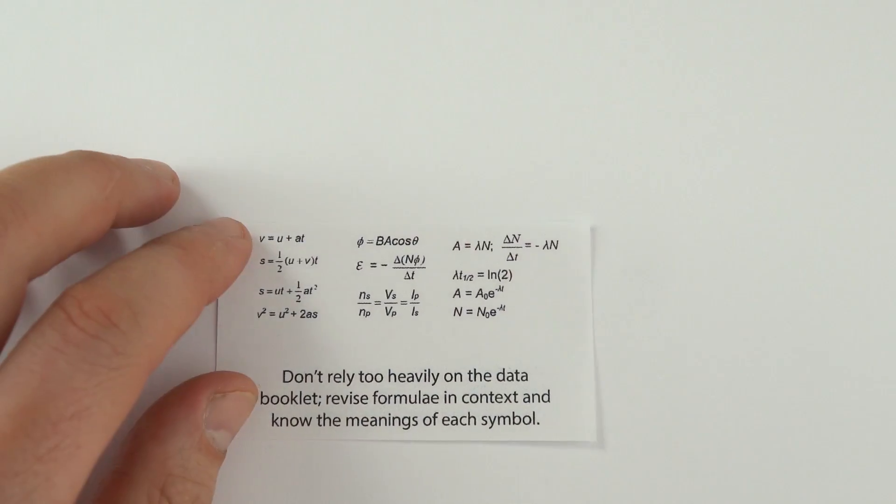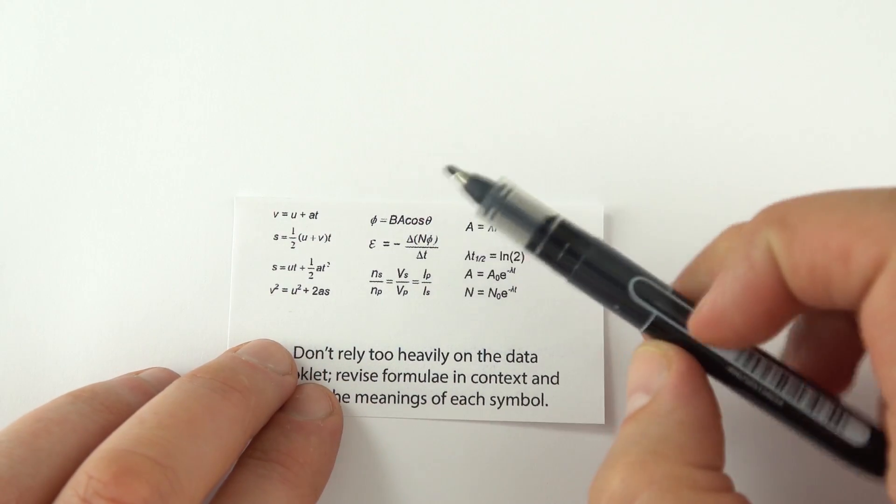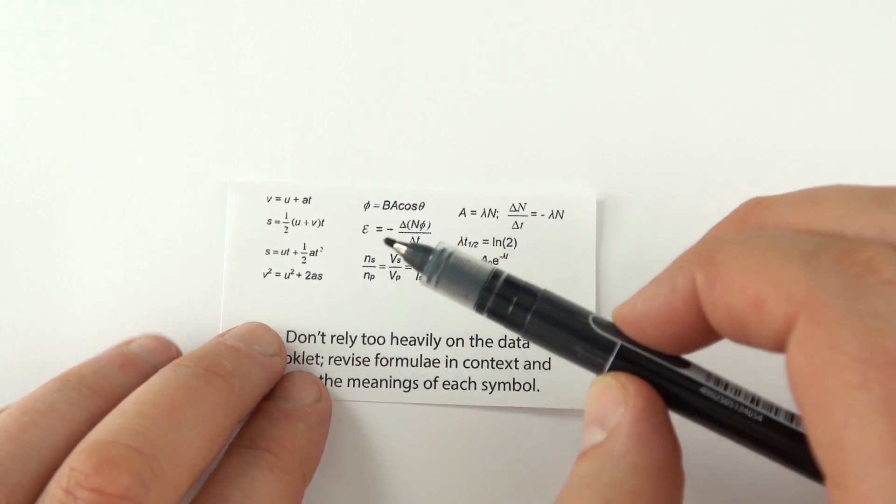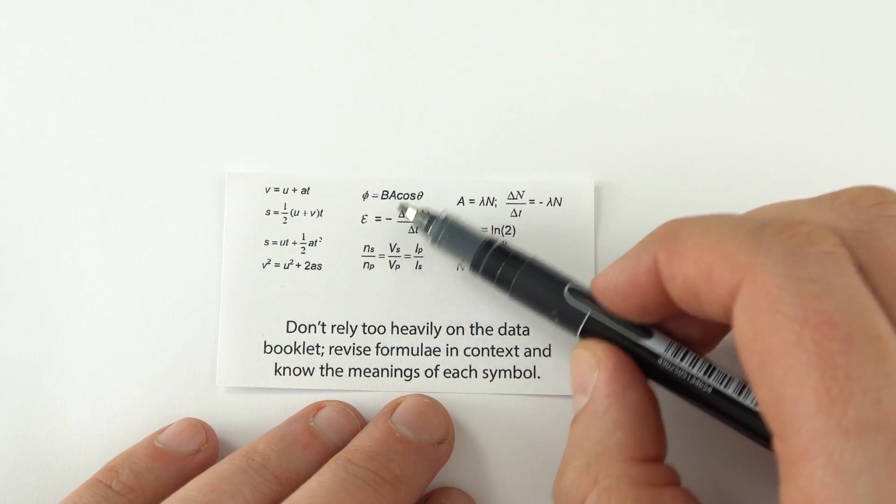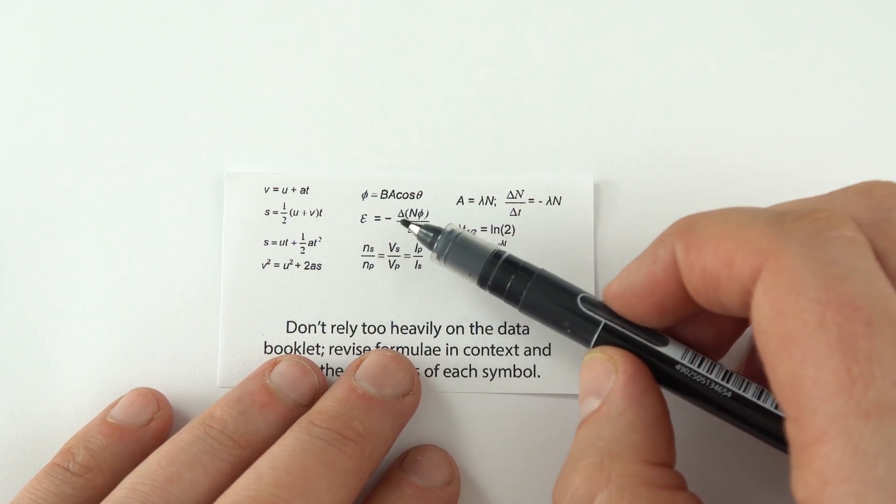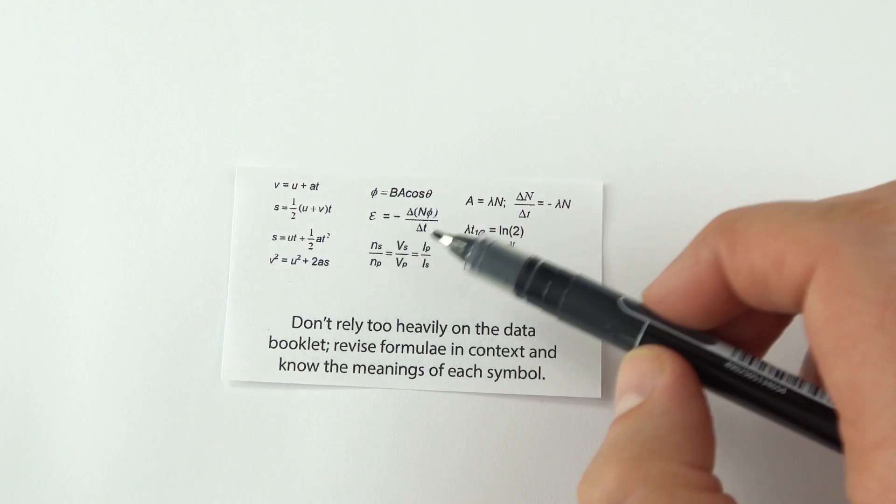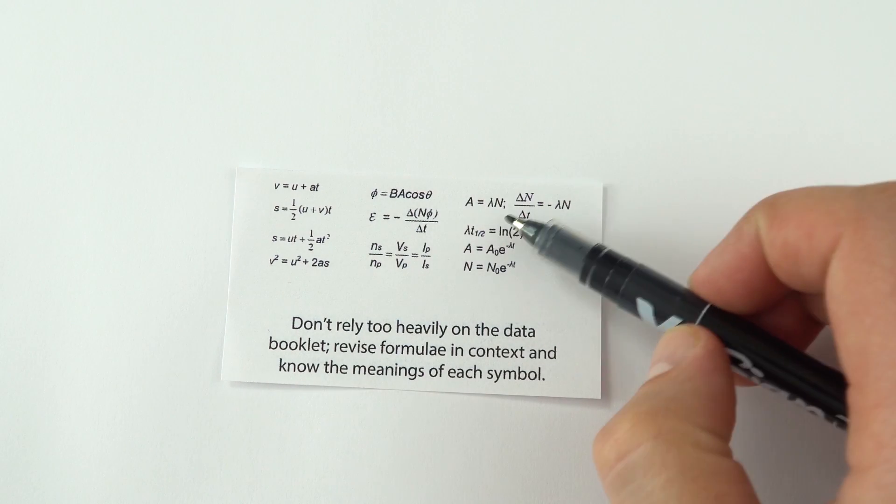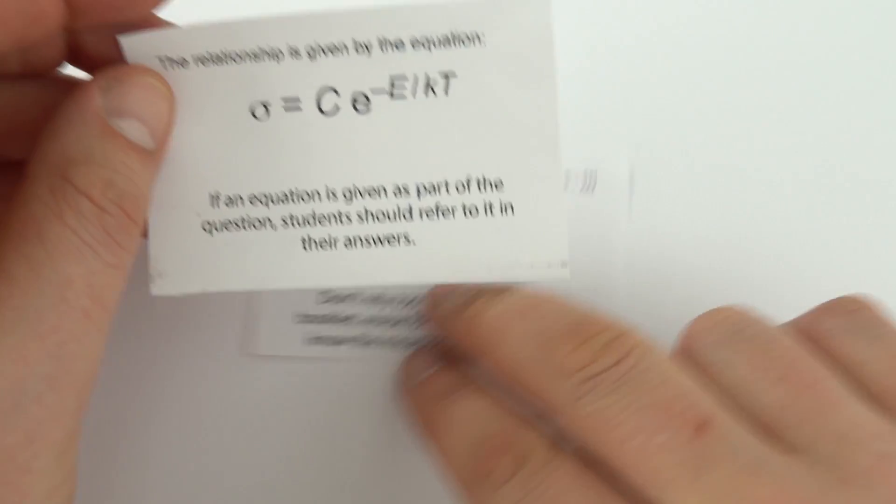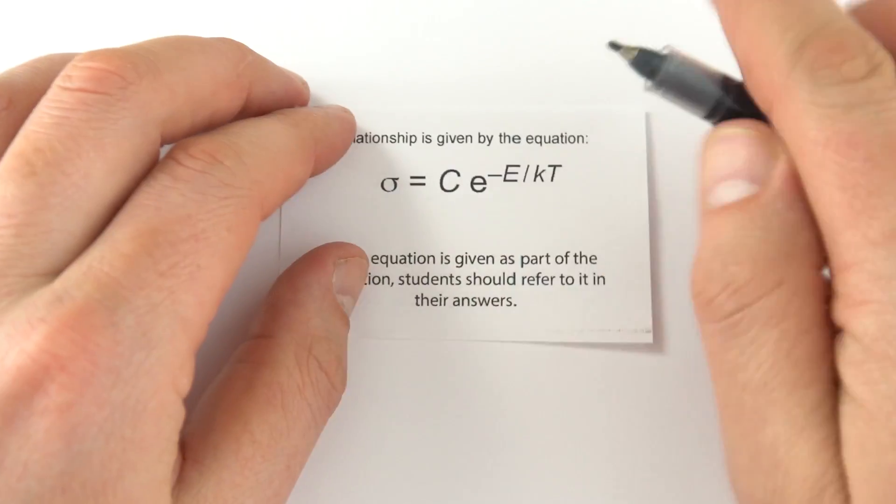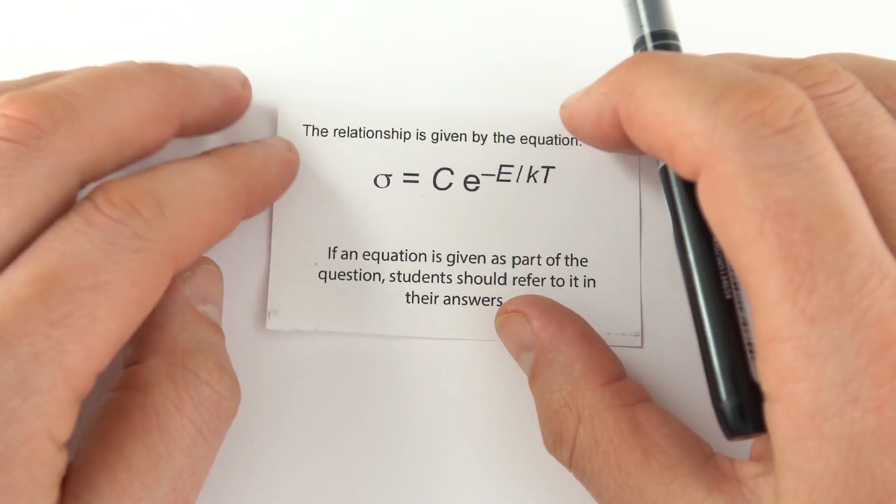The next thing they talked about was don't be too reliant on the data book. Yes, it's got huge amounts of equations. The thing is, if you've been working hard and you're revising well, you shouldn't need to use the data book. It's more there just to confirm that you've got the right equation. If you don't know the equations by now, by the time you get into the exam, that means you probably don't understand the physics that well. Make sure that you try and remember as many of these as possible and actually understand what all the symbols mean. If you don't know what any of the symbols mean, that means you need to spend a bit more time revising.